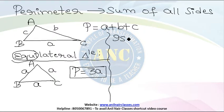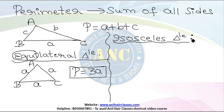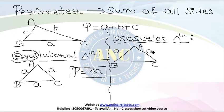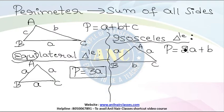Instead of making all three sides the same, if we make only two sides the same, it becomes an isosceles triangle. If two sides are each a and one unequal side is b, then the perimeter is a plus a plus b, which is 2a plus b. So: equilateral means all three sides equal; isosceles means two sides equal; scalene means all three sides unequal.